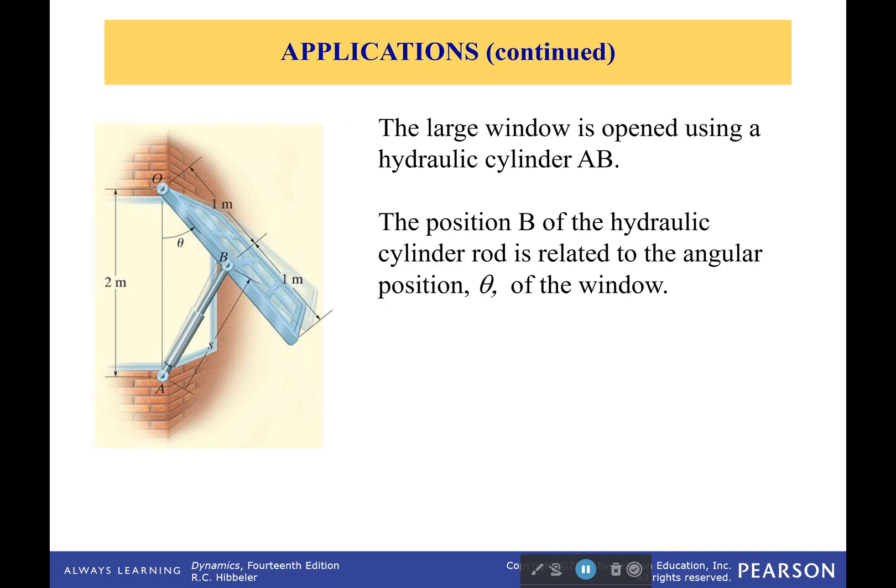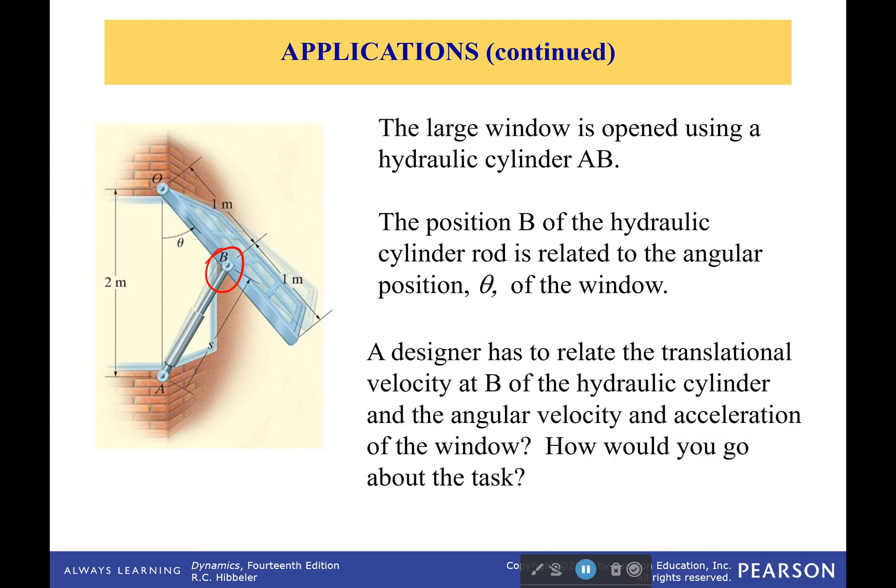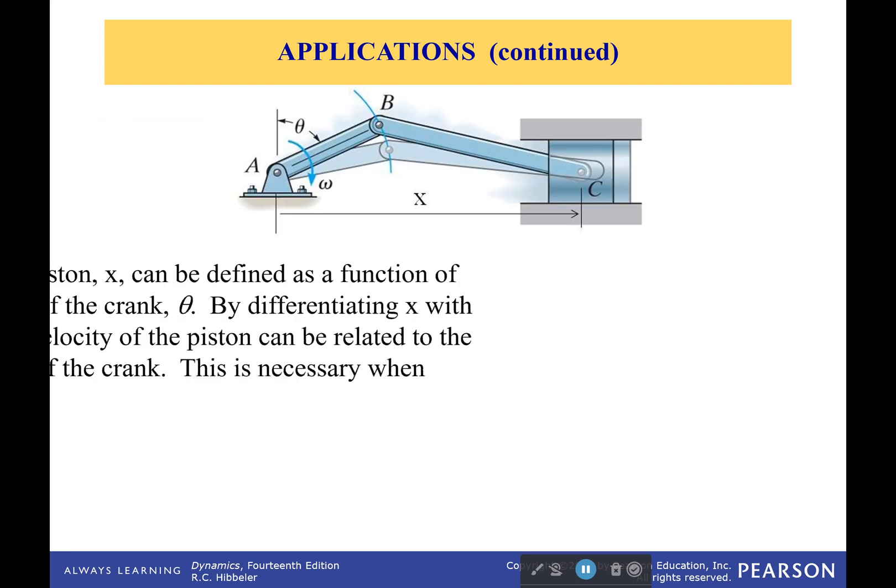So we have to figure out how we're going to connect all these different things together. Or in this case, we have a large window and it's operated by a hydraulic cylinder. And that position at point B is going to be related to the angular position theta of the window. But a designer had to relate the translation and velocity of B of the hydraulic cylinder and the angular velocity and acceleration of the window, so we don't accidentally crack the glass. But how would we go about that? Well, let's figure it out.